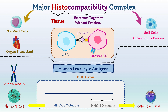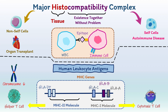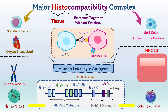MHC class 1 genes encode proteins which are HLA-C, HLA-B, and HLA-A. MHC class 2 encodes proteins called HLA-DP, HLA-DQ, and HLA-DR. Class 3 of MHC has a poorly defined structure and function, so they are not involved in antigen binding; a few are involved in immunity while others are involved in cell signaling for cell communication.